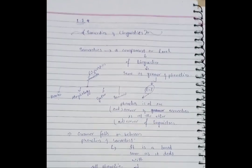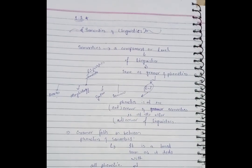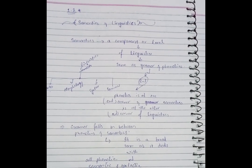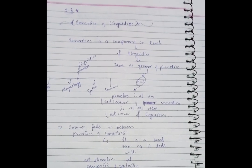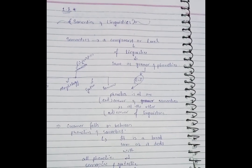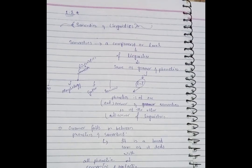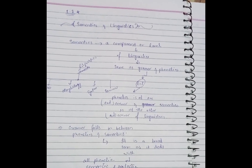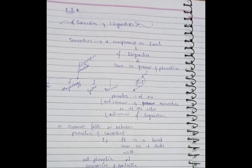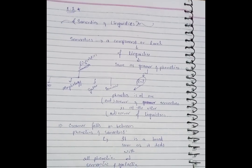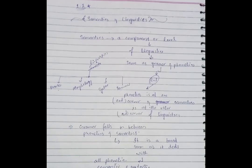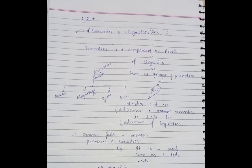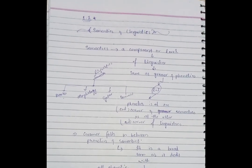Semantics 1.2 in F.R. Palmer's book, chapter number 1. We have section 1.1 which deals with semantics and linguistics and the meanings, and 1.2 also deals with semantics and linguistics.